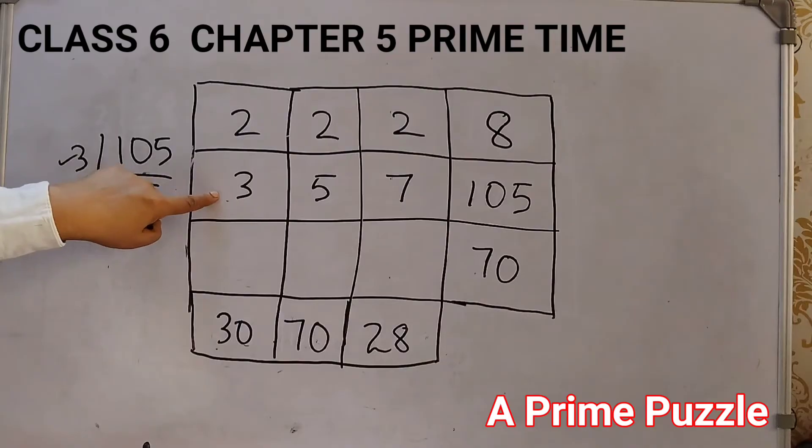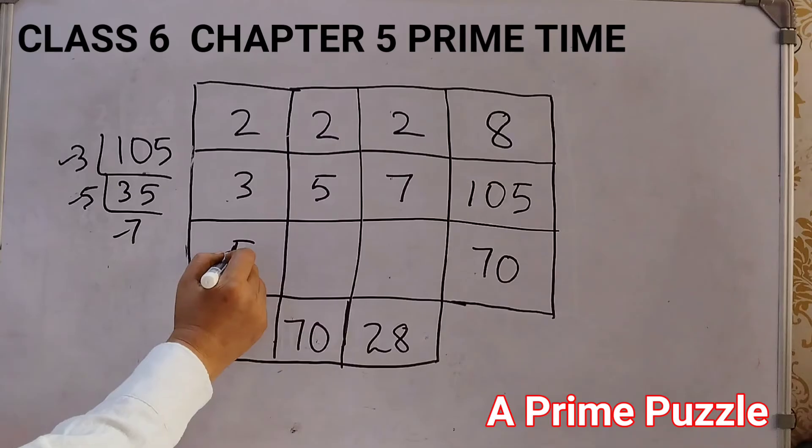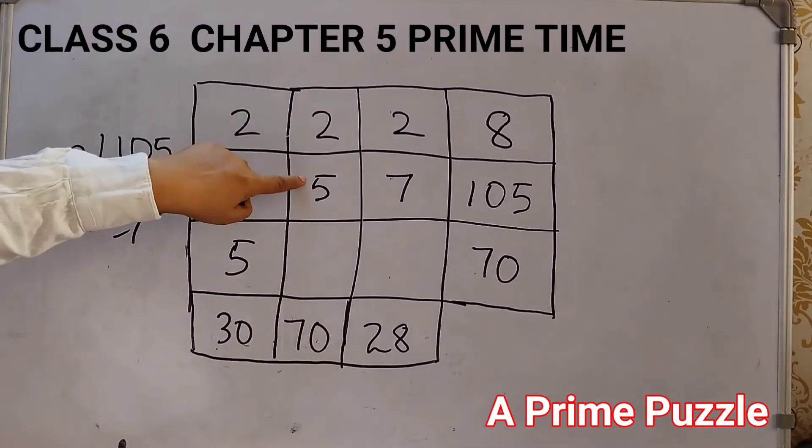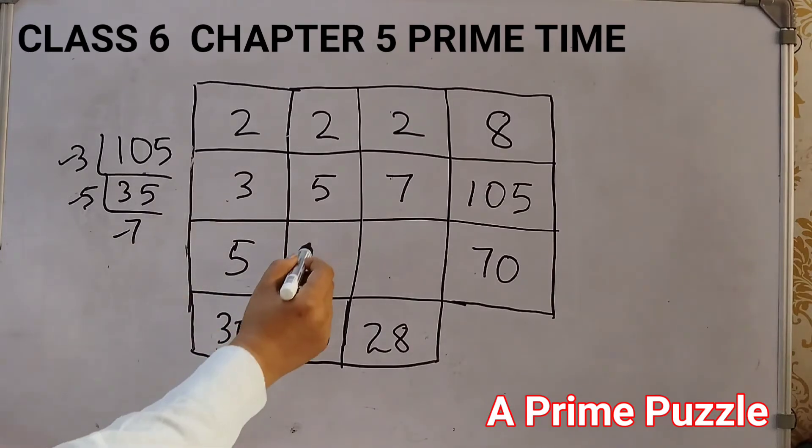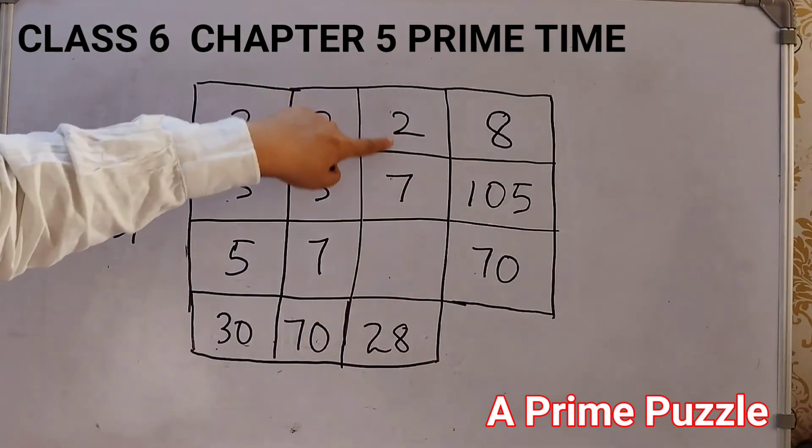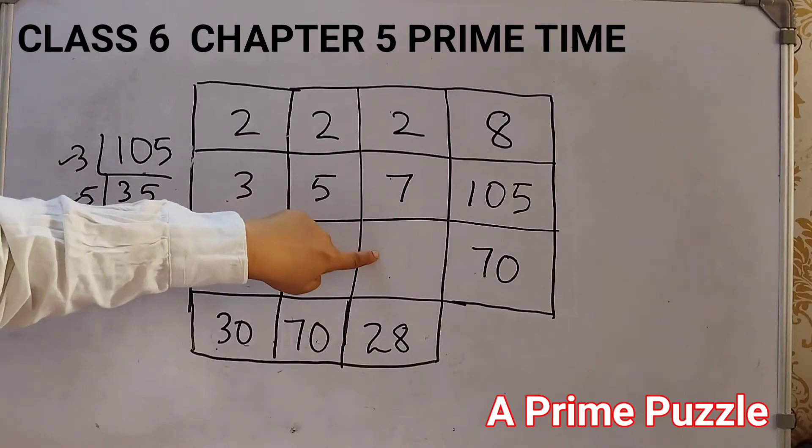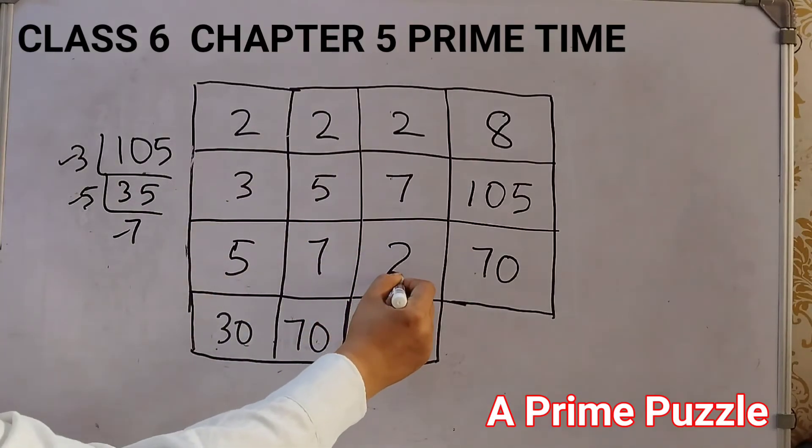2, 3's are 6, 6 into 5 gives 30. So 5 here, 2 5's are 10, 10 into 7 will give 70. So 7 here and 2 7's are 14, 14 into 2 is 28.